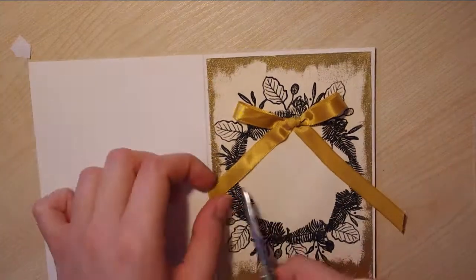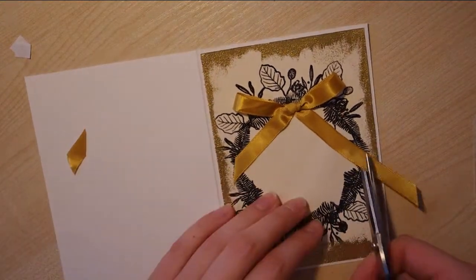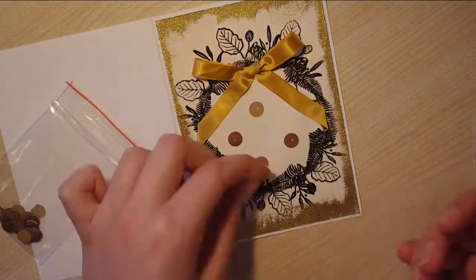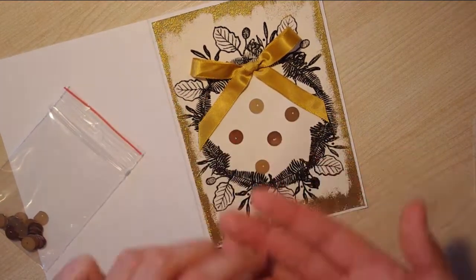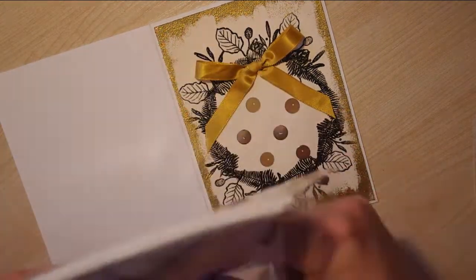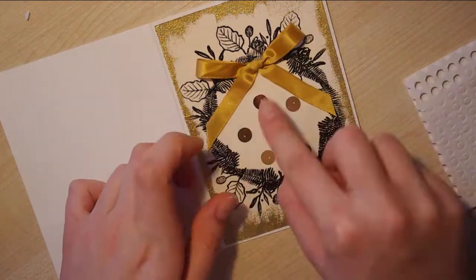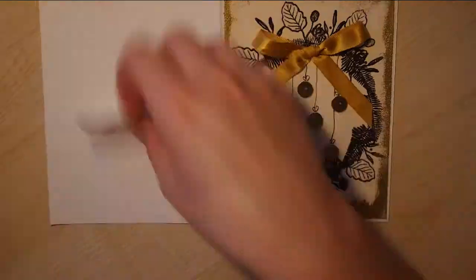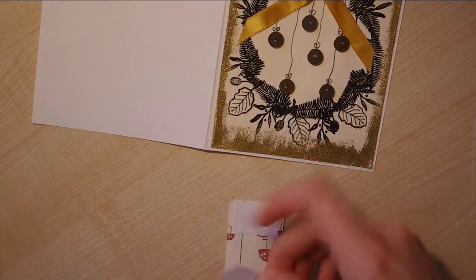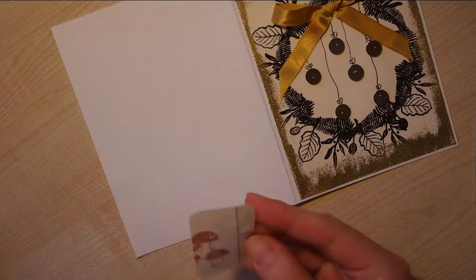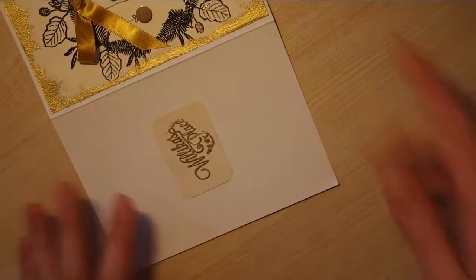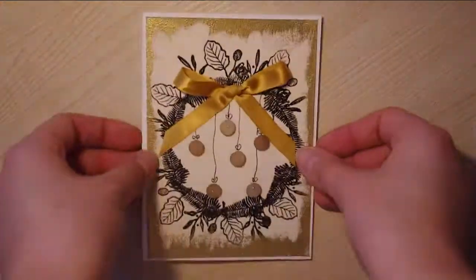I'm adding several sequins and putting those on foam stickers. As you can see, I drew some strings hanging from the bow to the sequins so they look like Christmas ornaments.